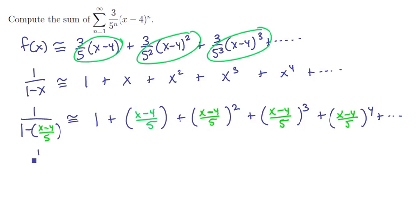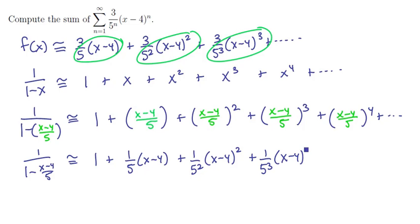Now let's clean this thing up here a little bit. On the left we have 1 over (1 minus (x minus 4) divided by 5), and on the right hand side we have 1 plus 1/5 times (x minus 4), separating the variables from the constants, plus 1 over 5 squared times (x minus 4) quantity squared, plus 1 over 5 cubed times (x minus 4) cubed, plus 1 over 5 to the fourth times (x minus 4) to the fourth power.